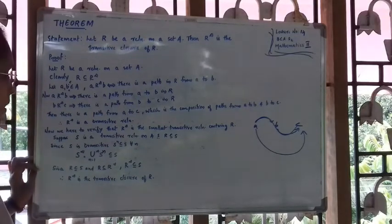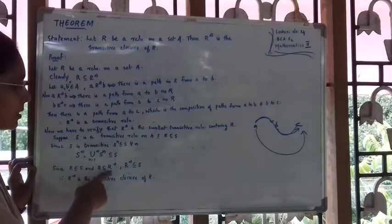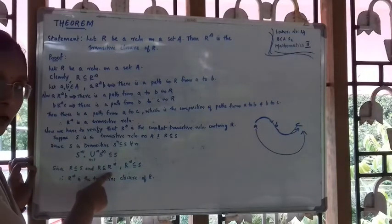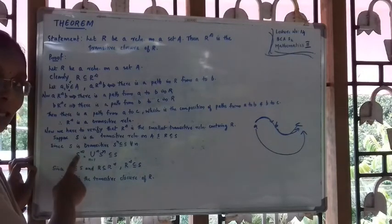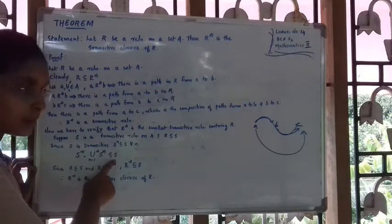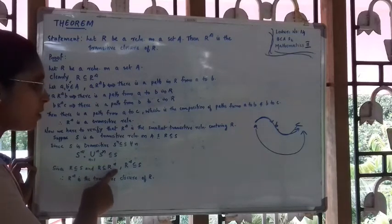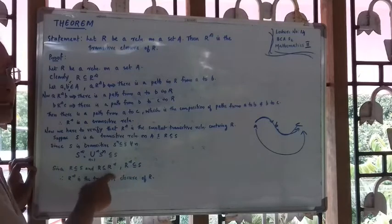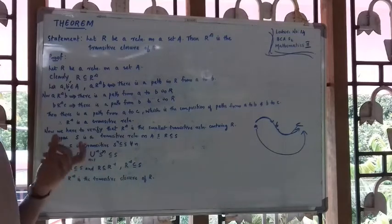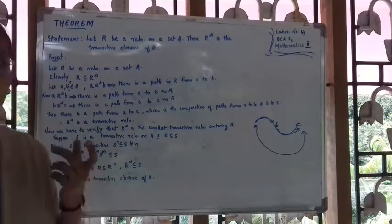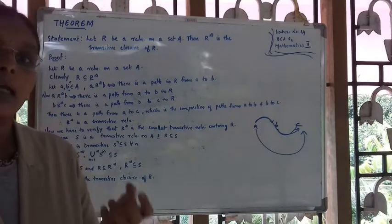Therefore R-Infinity is also a subset of S. So R is contained in S, and R is contained in R-Infinity. Since S-Infinity is contained in S, we can say that R-Infinity is also contained in S.